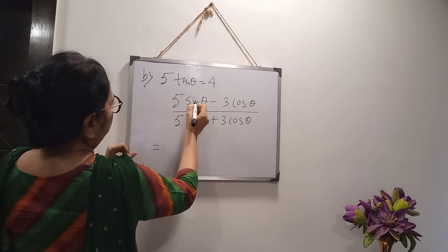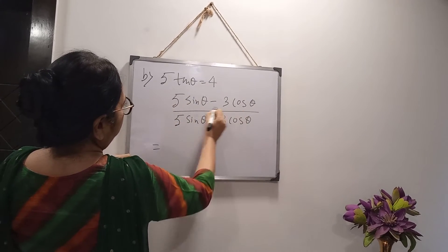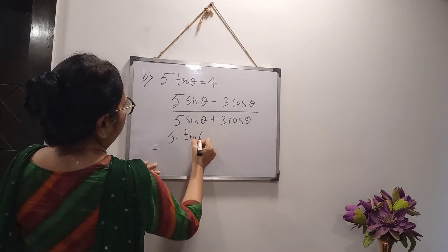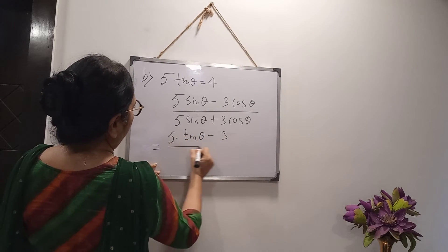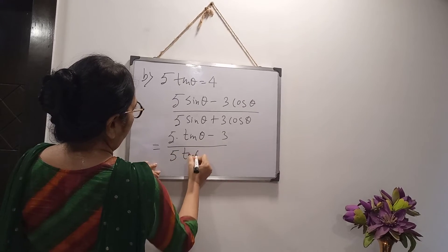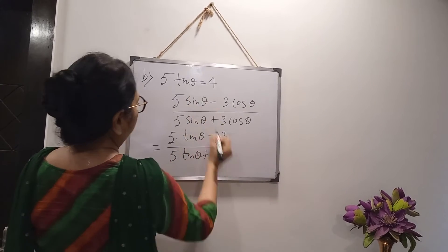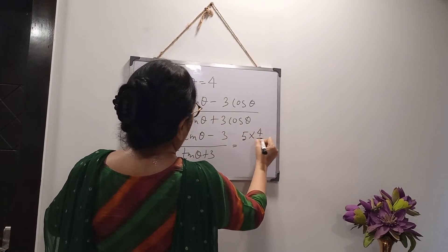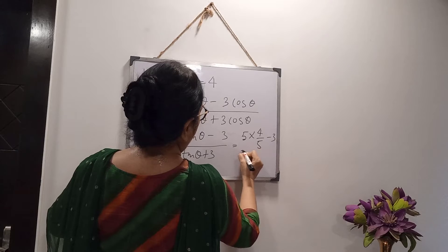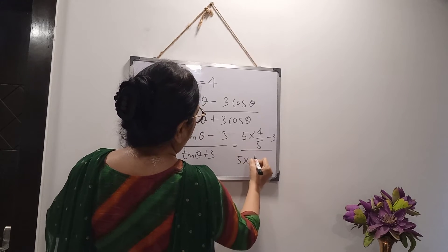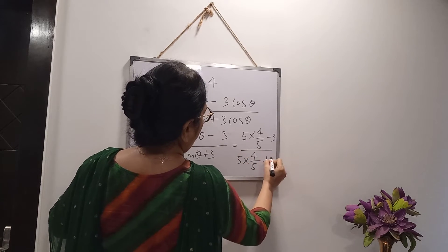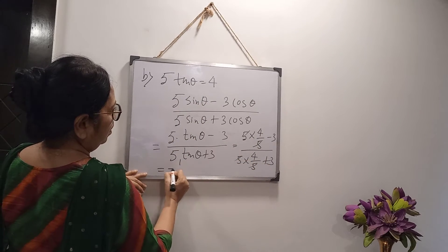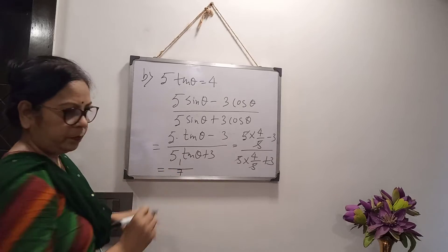Divide throughout numerator and denominator by cos θ. So we are getting 5tanθ - 3 in the numerator and 5tanθ + 3 in the denominator. Now the value of tan θ is 4/5, so put 4/5 in: (5 × 4/5 - 3)/(5 × 4/5 + 3) = (4 - 3)/(4 + 3) = 1/7.